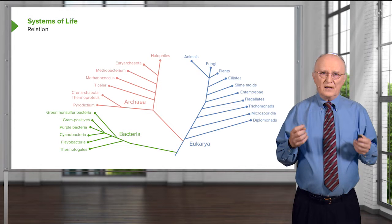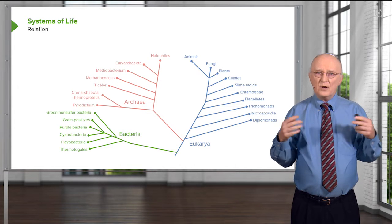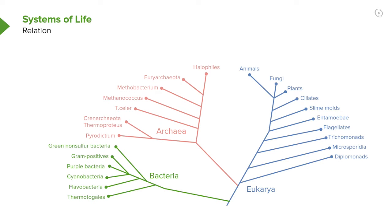Another system for organizing life, shown on the screen, is based on evolutionary distance. We think that all life on earth ultimately came from one primordial cell, and that one primordial cell evolved and gave rise to all the life forms that we see today. This plot shows as lines the evolutionary distance each living system is from that primordial cell and, by extension, how far each living system is evolutionarily from each of the others. On the lower left, we can see bacteria.